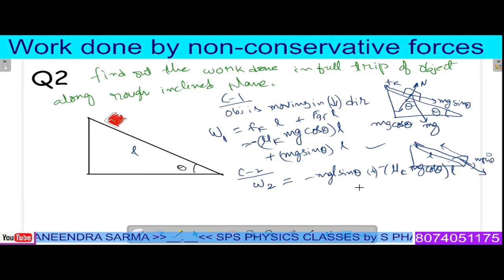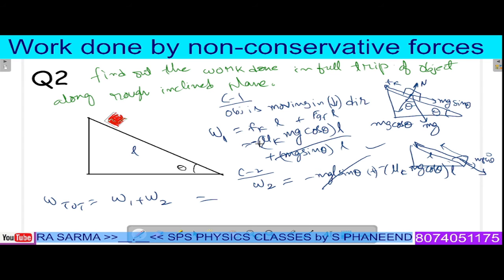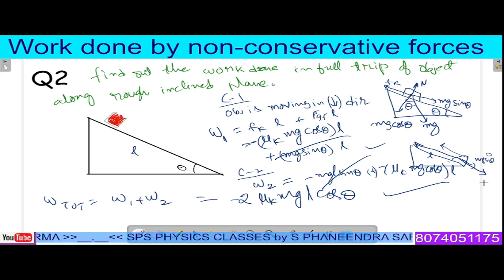In the given case, upon taking the sum, W total equals W1 plus W2. Upon adding the two terms, plus mg L minus mg L cancel. Minus mu k mg L cos theta minus mu k mg L cos theta gives minus 2 mu k mg L cos theta. This is the total work done over the full trip of the system.